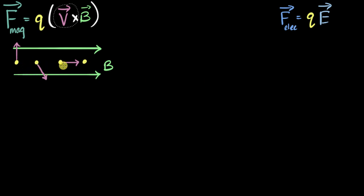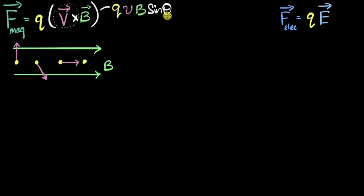To figure out how strong the force is, we look at the magnitude of this equation. The magnitude of the force is Q times the magnitude of V cross B, which equals Q times V times B times sine of the angle between the two. So the angle between the velocity and the magnetic field matters. For the first proton, the angle is 90 degrees, so sine 90 equals one — that's maximum. This proton experiences the maximum magnetic force.